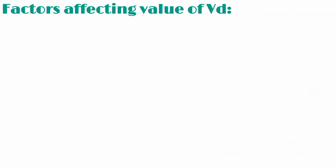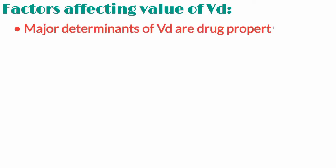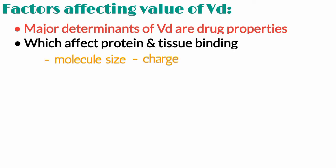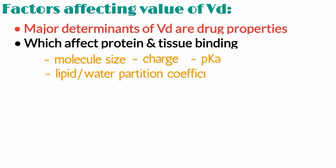Now let us see the factors affecting the value of volume of distribution. The major determinants of VD are drug properties, which affect protein binding and tissue binding. These consist of molecule size, charge, pKa, and the lipid-water partition coefficient.